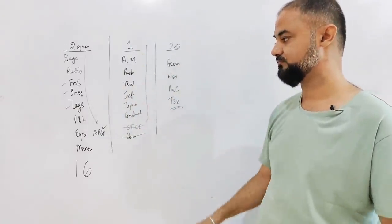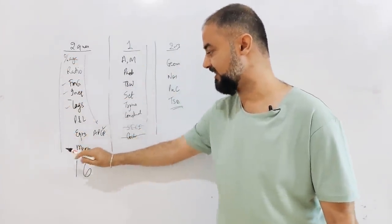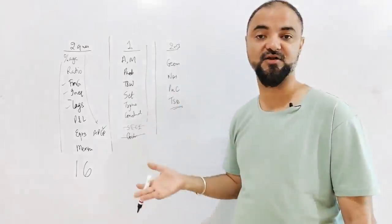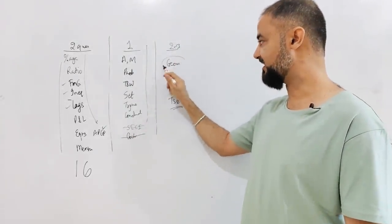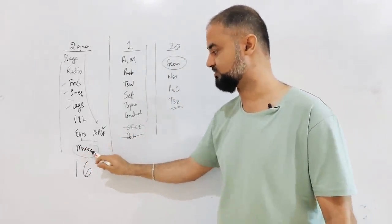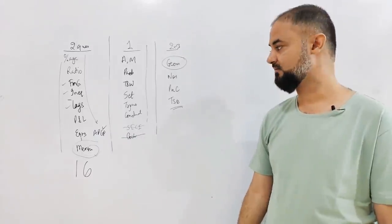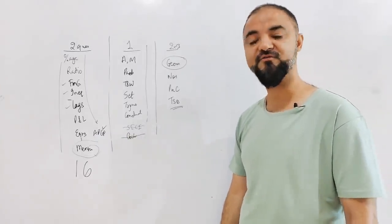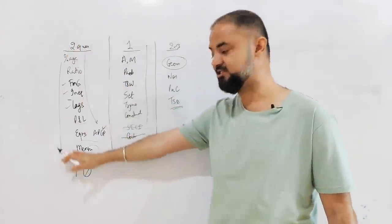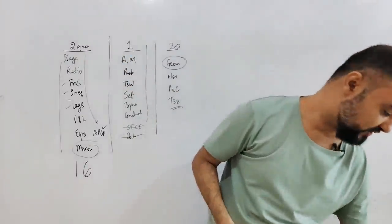The traditional topics like geometry, numbers, P&C, time speed distance - each of them is two questions, maybe three questions as well, but the level of difficulty will be very, very high. I want you to start like this: go in that flow, first complete these topics. Geometry and mensuration combined is around four to five questions, but geometry will be two questions, mensuration should be two questions. You can do mensuration first. If you want to clear the cutoff and focus only on these topics, you can clear the cutoff.